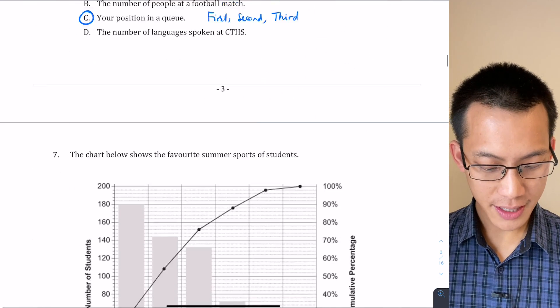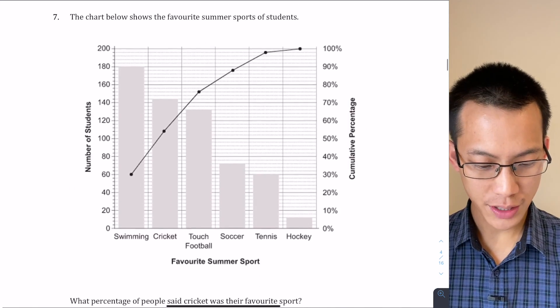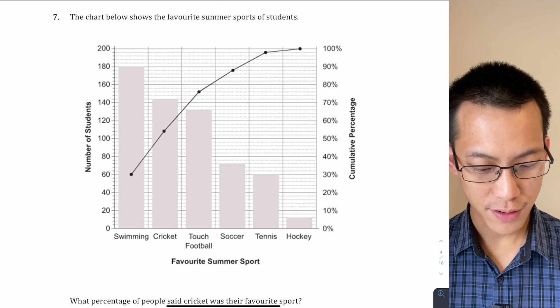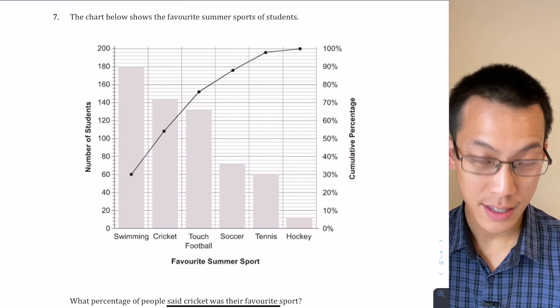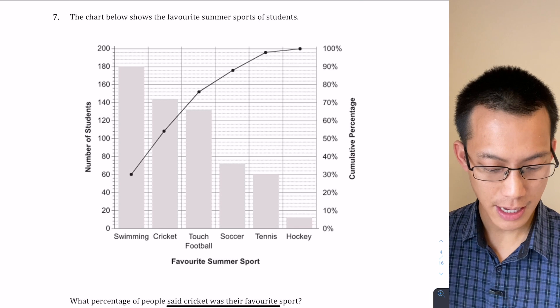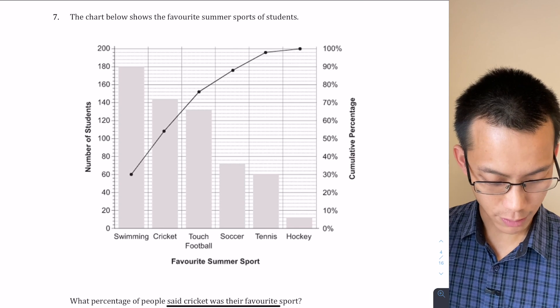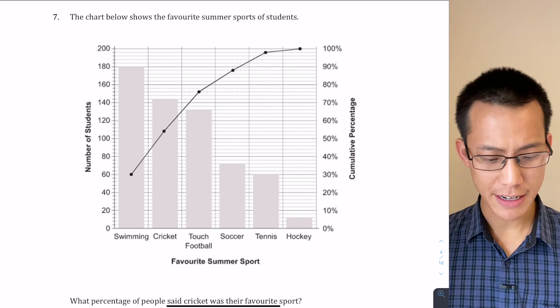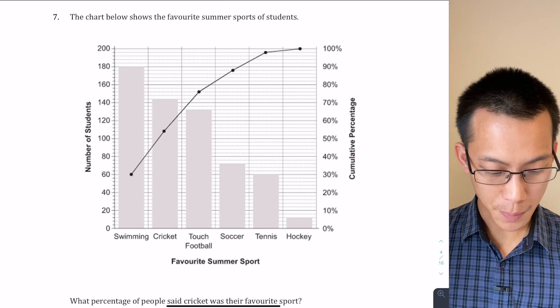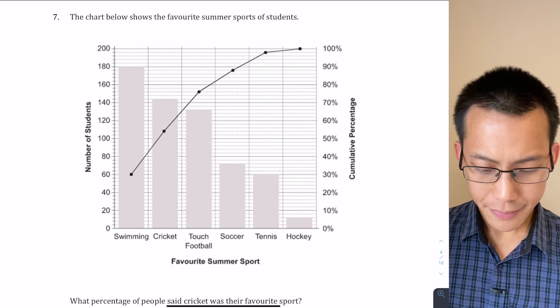Right, now the last statistical question in the multiple choice is number seven. The chart below shows the favorite summer sports of students. This is a Pareto chart, so you can see it's in order from swimming, cricket, all the favorite summer sports, it's in decreasing order—so the most popular is swimming and then cricket and so on.